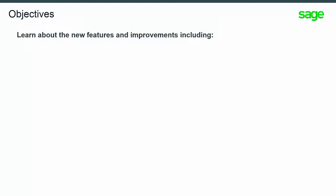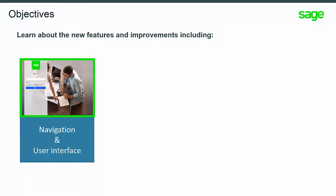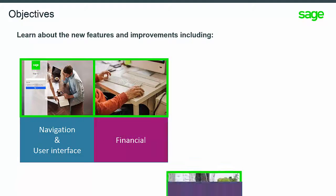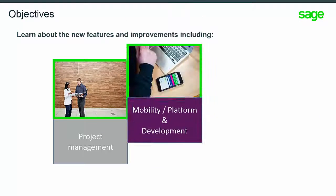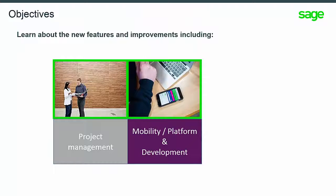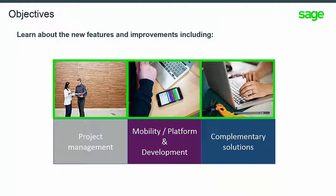In this topic, you will receive a high-level overview of the new features and improvements of Sage X3 version 11. This includes features in navigation and the user interface. You will also learn about improvements in financials, distribution, manufacturing, project management, mobile and platform, as well as development improvements, and complementary solutions that integrate with Sage X3 to extend functionality in many areas.